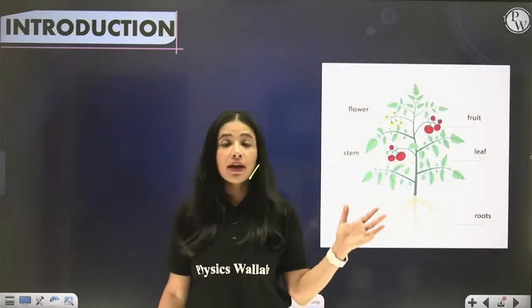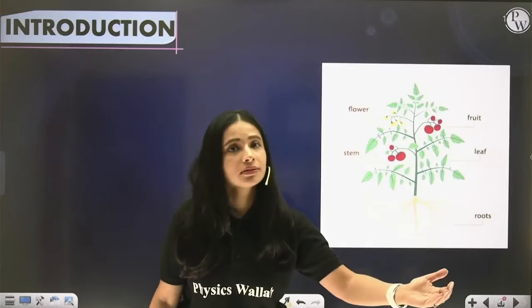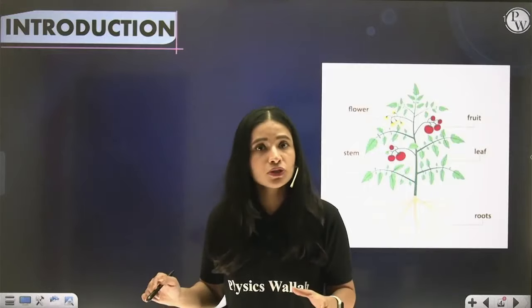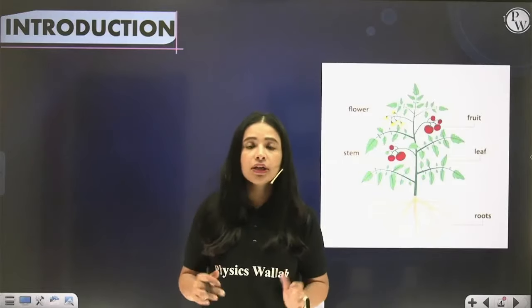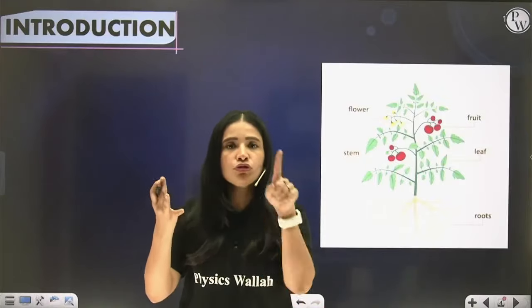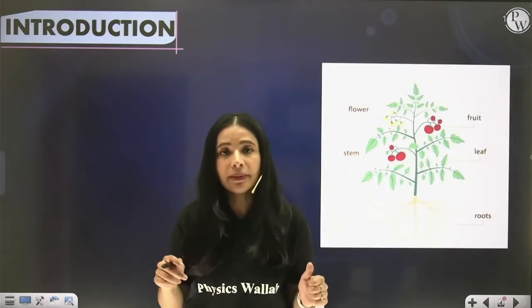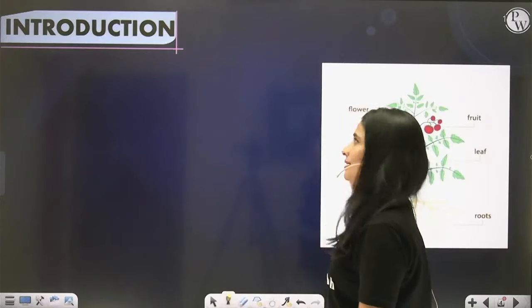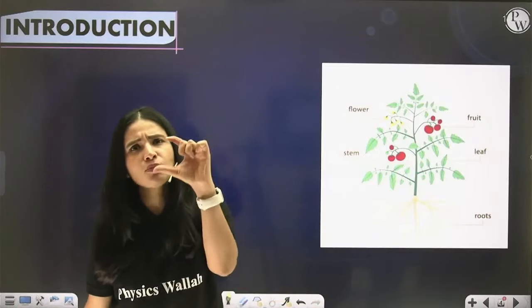We are going to start with the introduction of this chapter. Morphology means the study of external structures. In this chapter, you will study all the external structures of the plant body — flowers, fruits, leaves, roots, stem, etc. Now, from where does this plant arise? This whole big plant arises from a small seed.